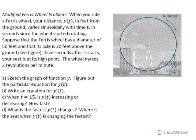This is the modified ferris wheel problem. When you ride a ferris wheel — like the one at the Santa Monica Pier Pacific Park, or the one at the Irvine Spectrum, or at a carnival — your experience can be modeled mathematically.